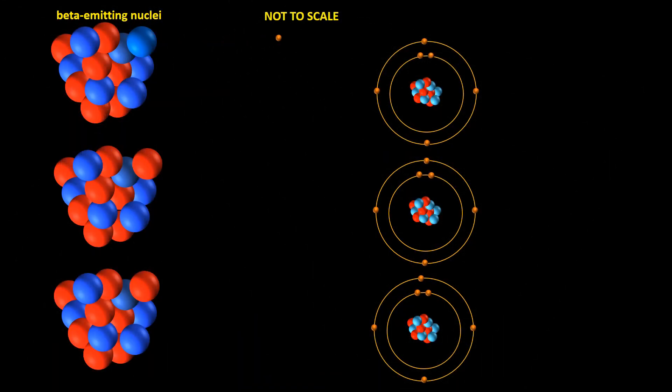So a beta minus particle, or beta minus radiation—both expressions are fairly common and they both mean the same thing—is a form of ionizing radiation, just like alpha radiation is.